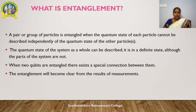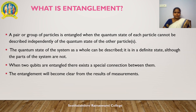Quantum computers promise exponential speedup in solving certain types of problems by using quantum principles like superposition and entanglement. But the use of quantum states also leaves the quantum computer much more vulnerable to errors than a classical computer. These errors arise from decoherence, a process in which the environment interacts with the qubits uncontrollably, changing their quantum state and causing information stored in the quantum computer to be lost. That is why researchers do their best to protect qubits from the outside world in supercooled fridges and vacuum chambers.